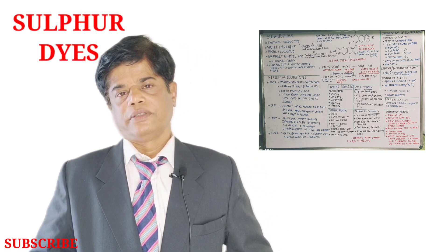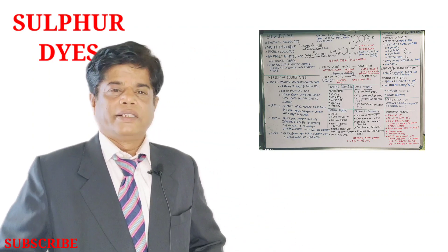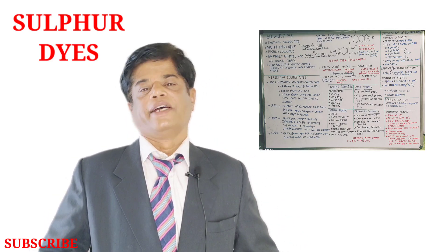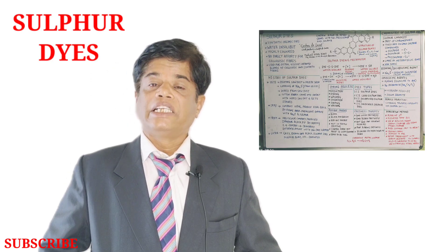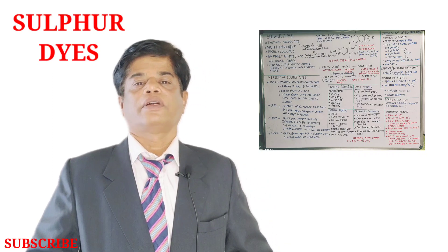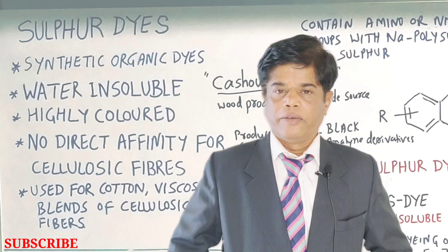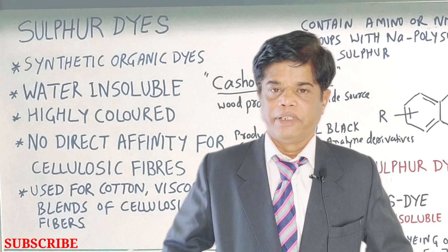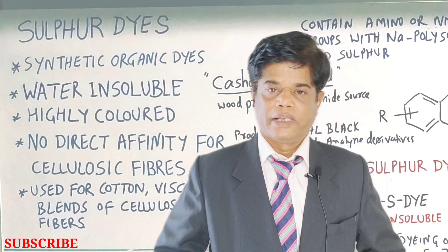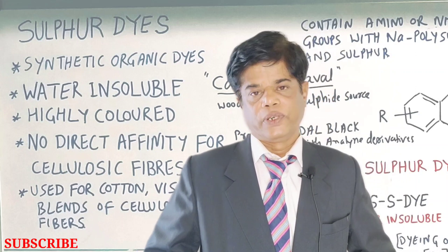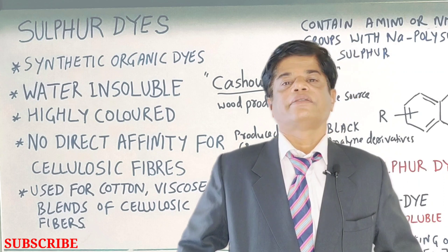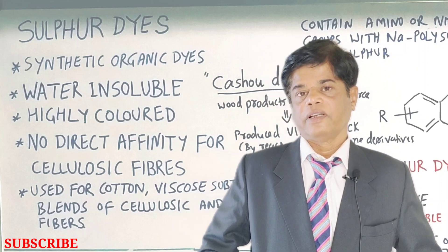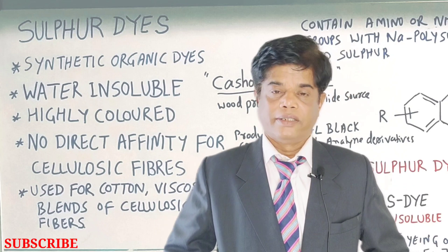Sulfur dye is a synthetic, organic, water-insoluble dye, and it is substantive especially for cellulosic substrates. It is called a synthetic dye because it is synthesized in a chemical lab. It is not a natural dye like indigo, and it is not a direct dye.